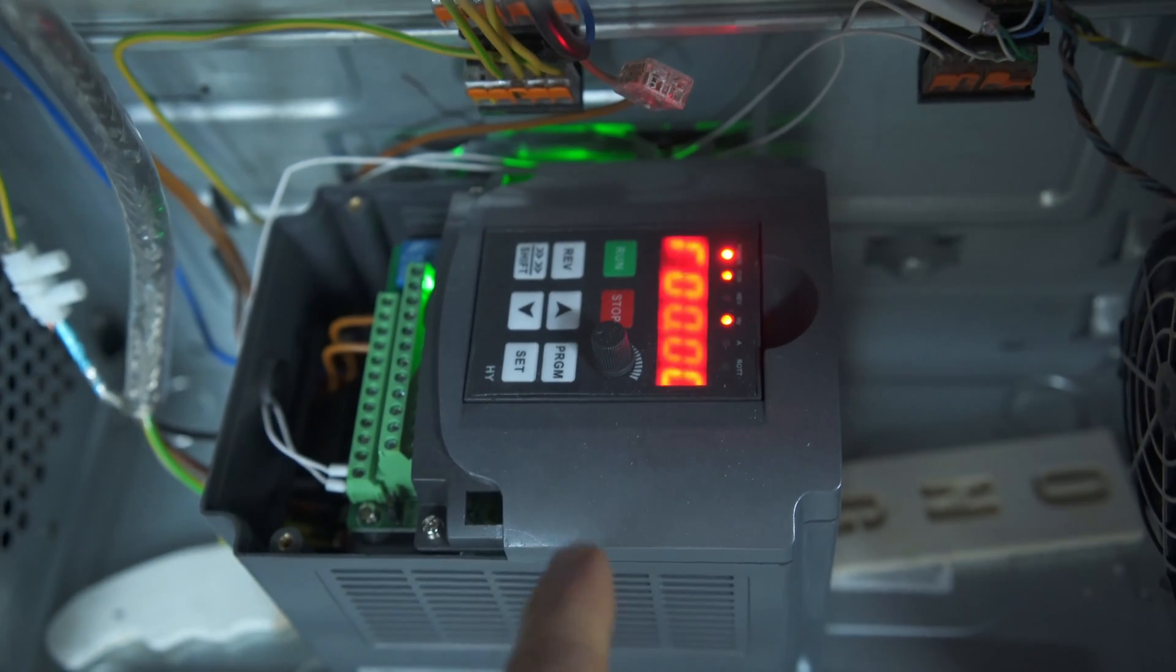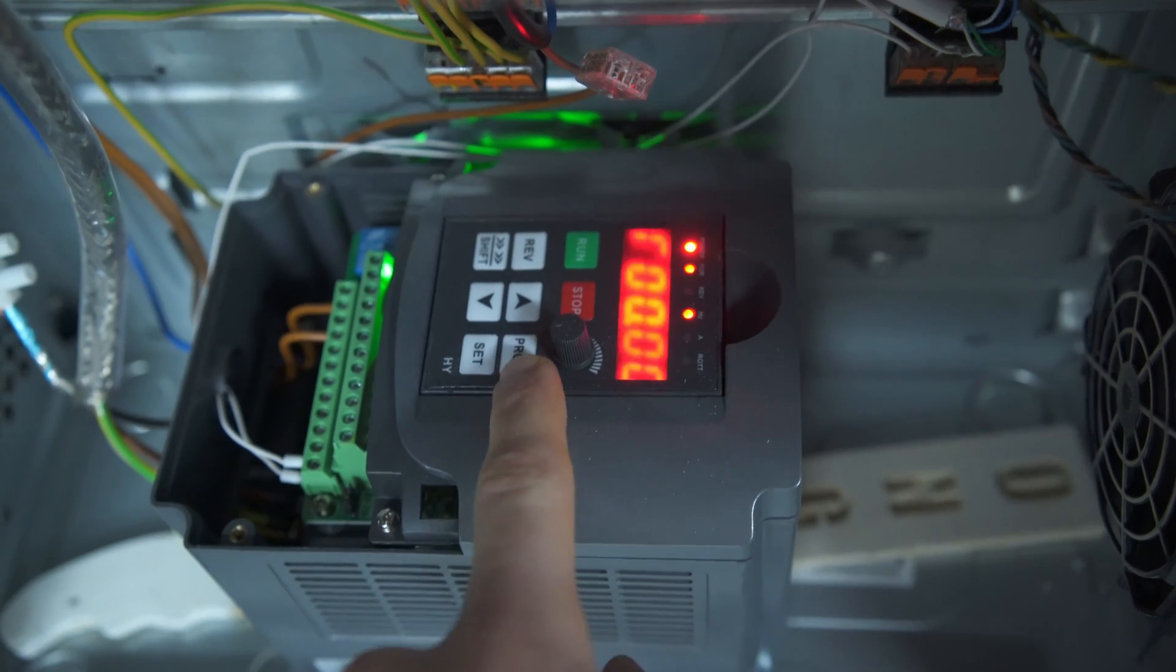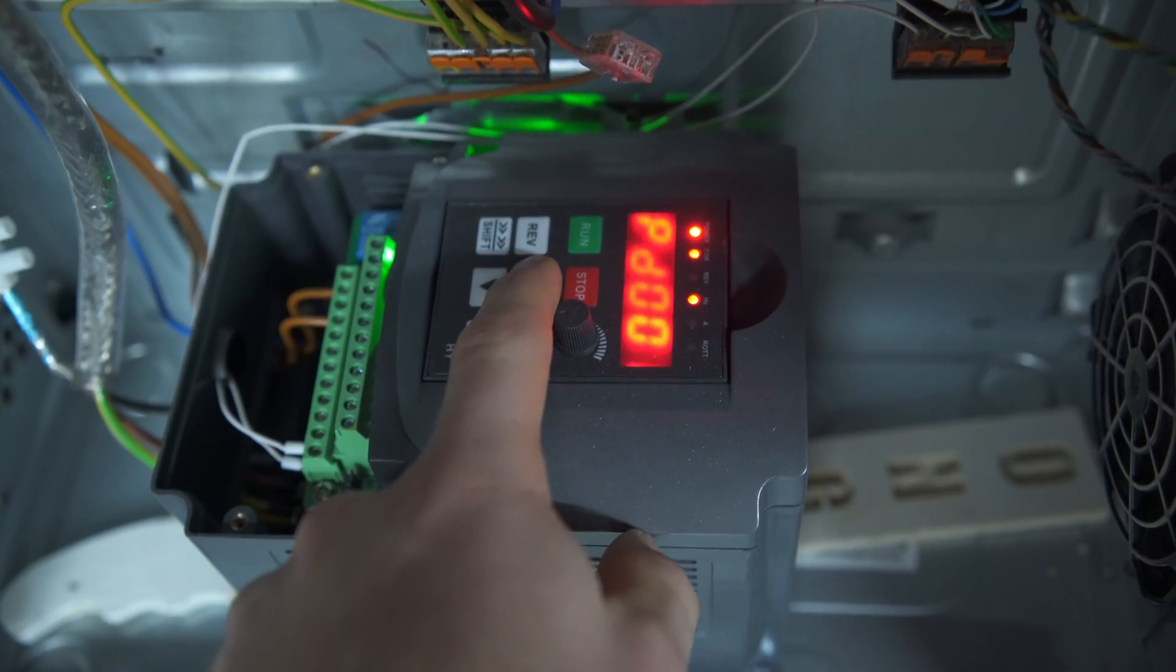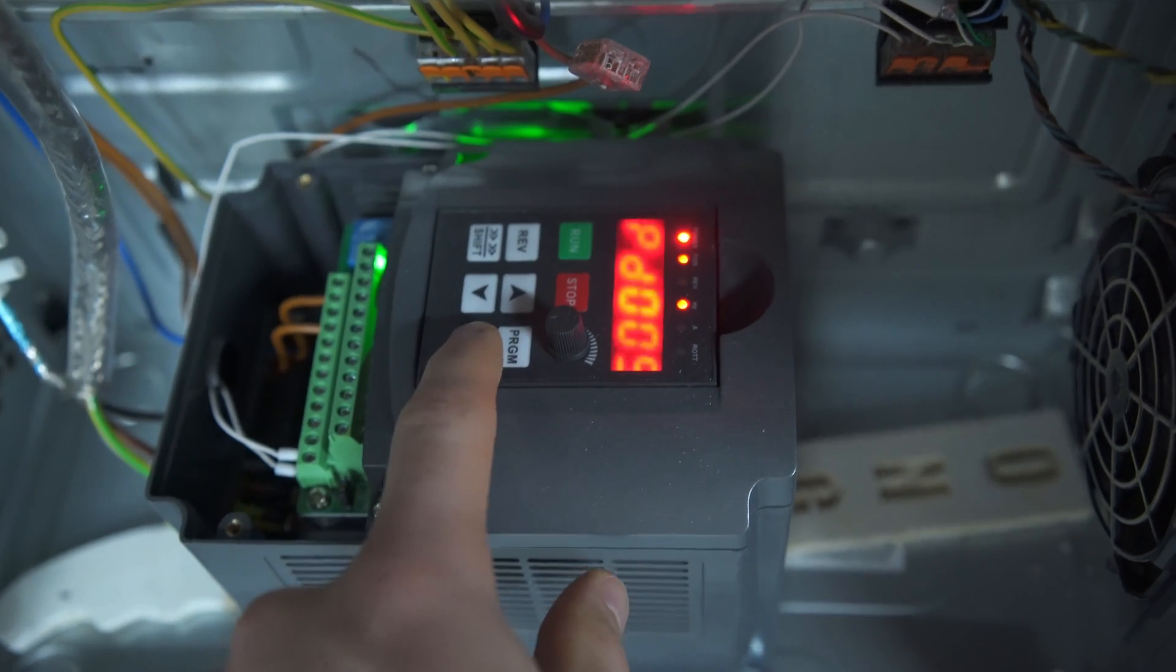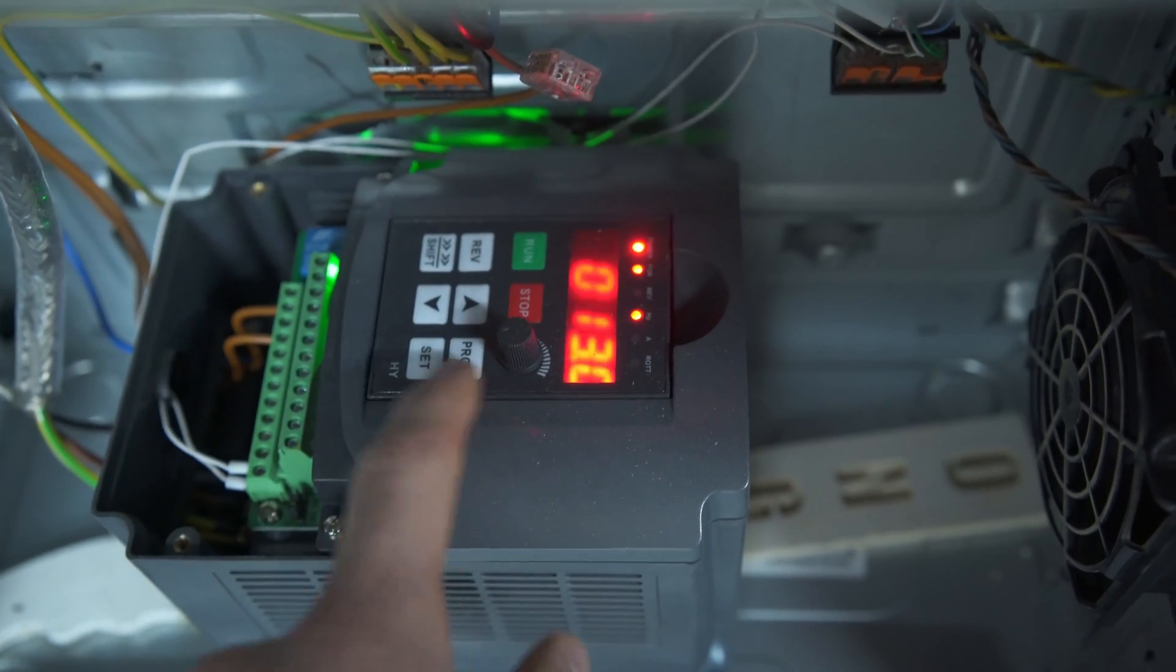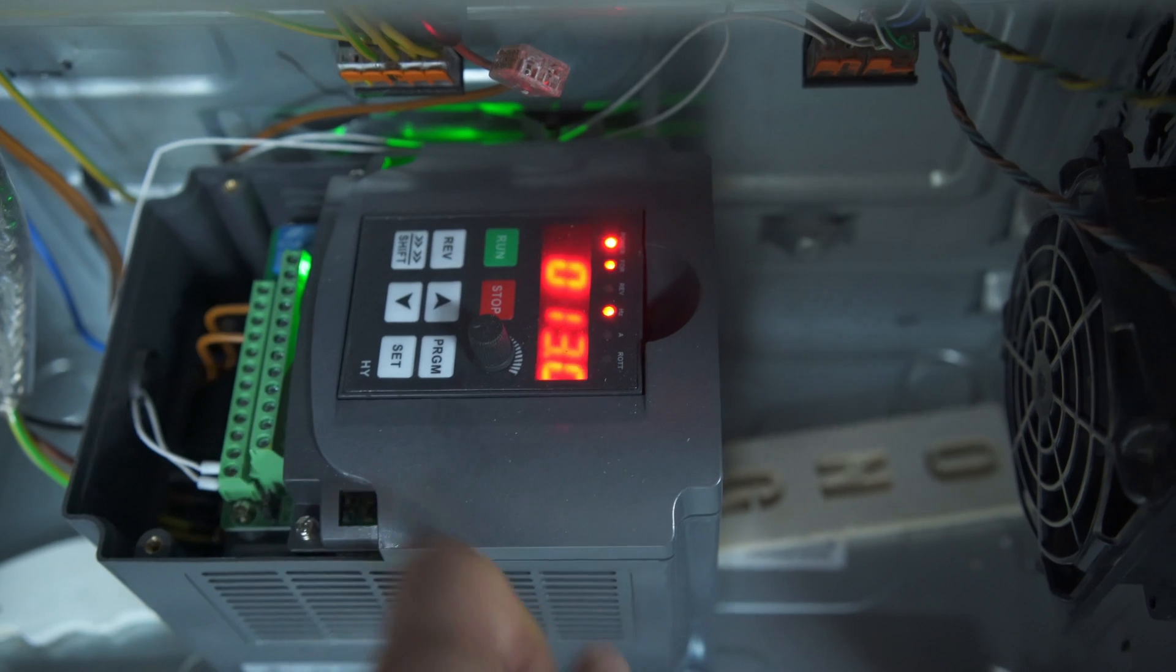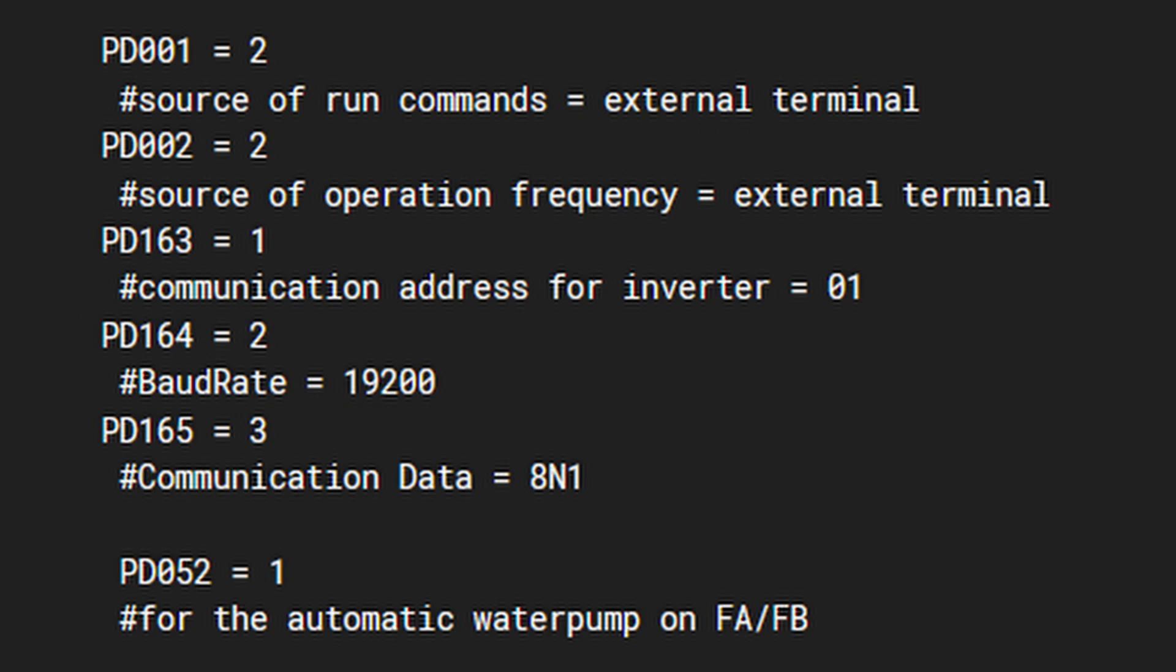We also need to do some changes to the VFD software. To program it press program. With the arrow keys switch to the parameter you want to change. Press set. Then change the parameter. Press set again and you are done. These are the parameters I had to change to control the VFD via Modbus.